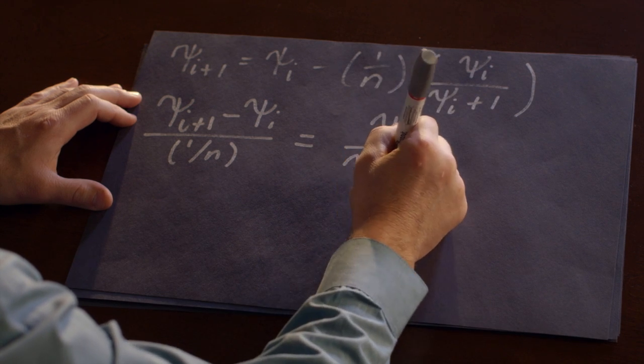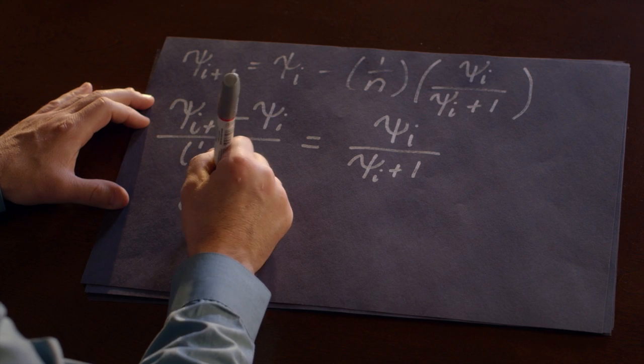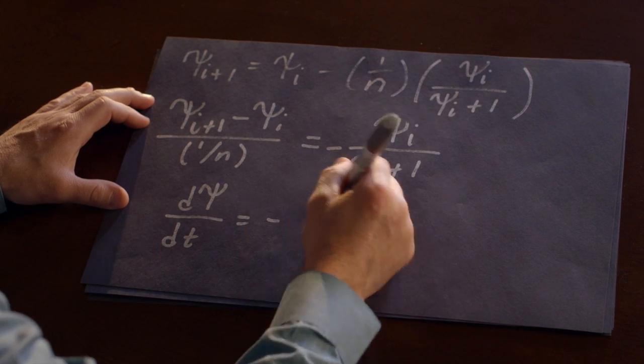This is called the difference quotient. And if we think about one over n as a small number, we can approximate this discrete relationship with a continuous one.